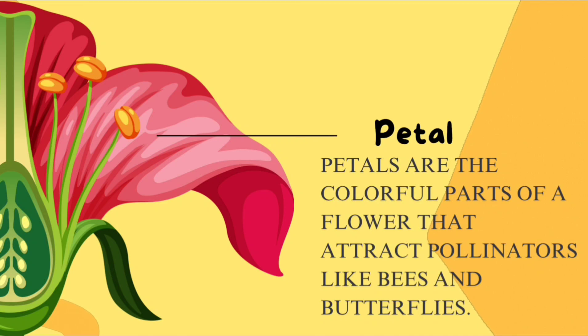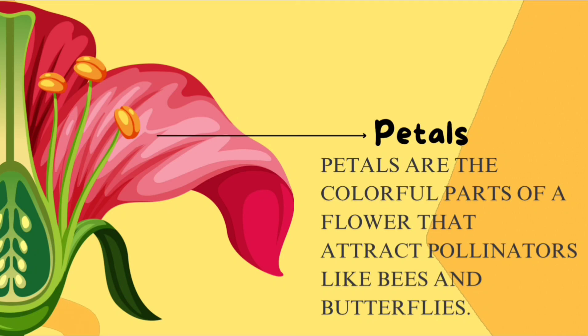This part of a flower is called petals. Petals are the colorful parts of a flower that attract pollinators like bees and butterflies.